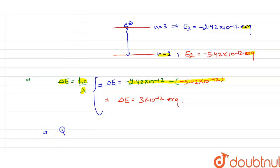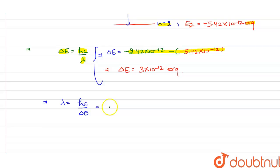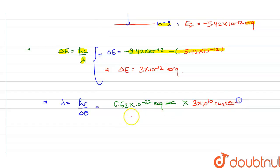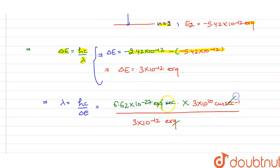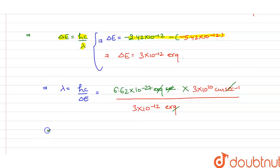Making λ the subject: λ = hc/ΔE. We know that Planck's constant h = 6.62×10⁻²⁷ erg·second, the speed of light c = 3×10¹⁰ cm/s, and ΔE = 3×10⁻¹² erg. The erg units cancel out, and seconds cancel, leaving us with λ in centimeters.